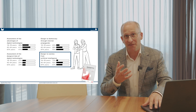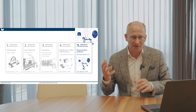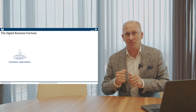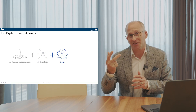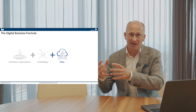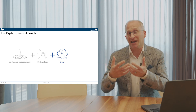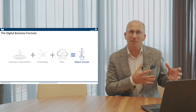Coming back to the organizational context as part of the fifth industrial revolution, we have seen in previous episodes that the digital business formula is to understand what customers would like from us, what technology there is, and how we can leverage data strategically. If we have a clear understanding of customer expectations, technology availability, and the strategic use of data, then new digital business opportunities will present themselves.